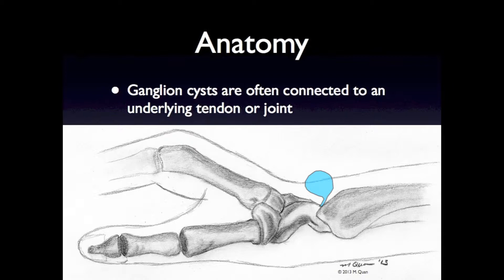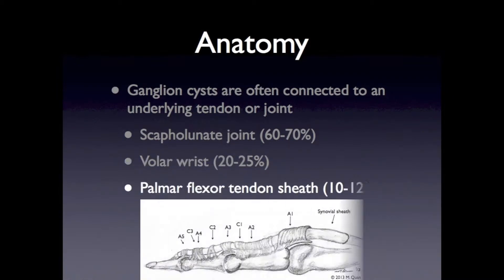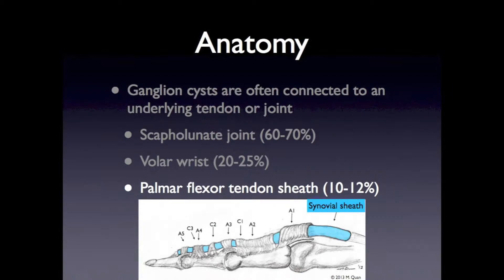Ganglion cysts typically arise from an underlying tendon or joint. The most common location is from the scapholunate joint, occurring 60 to 70 percent of the time. Twenty to 25 percent arise from the volar aspect of the wrist, and 10 to 12 percent from the flexor tendon sheath of the finger. One should avoid aspirating a volar radial wrist cyst due to proximity to the radial artery, which may be displaced by the ganglion or even wind through a multi-septated ganglion. A volar radial wrist mass could actually be a radial artery aneurysm and not a ganglion.